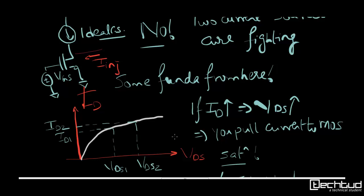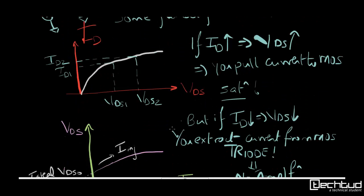Now if you eject from this drain terminal some current, it means that this MOS will get less current. In that case VDS will decrease and it may go to the linear region, and once the device is in linear region there is no amplification.